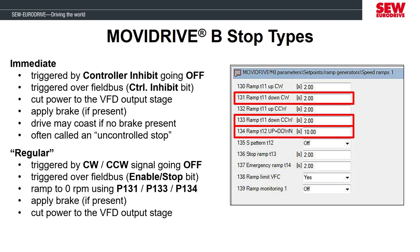The MobiDrive could have its parameters configured in a way that keeps voltage and current on the output stage even after the enable is removed. So the output doesn't always cut off at the end of a stop condition if the parameters in the MobiDrive are set to keep the output on. But in our case, since we were using a brake on the motor, the output did cut off after the brake was engaged.